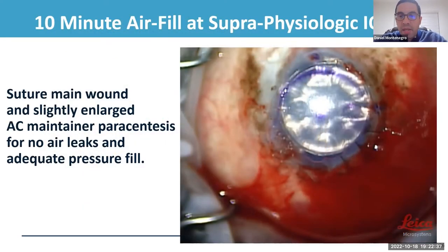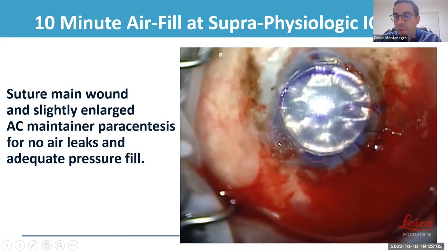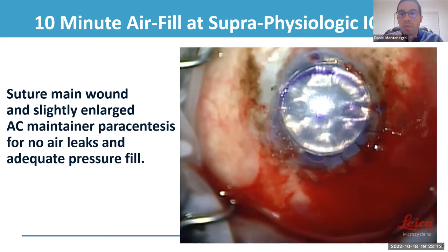We then remove the AC maintainer once the graft is inserted. I always suture the main wound with one or two sutures, and also suture the wound where we had the AC maintainer. It's very important to suture those wounds so that you can have a good air fill without leakage. The one thing you don't want to do is leave your wounds unsutured and then try to get a good air fill, because the air will keep escaping. It's better to suture before you start manipulating the graft.